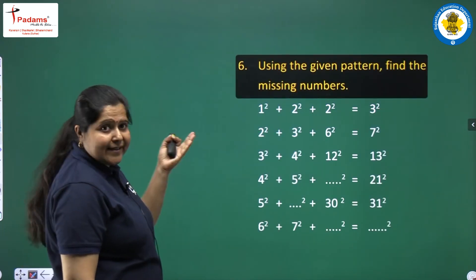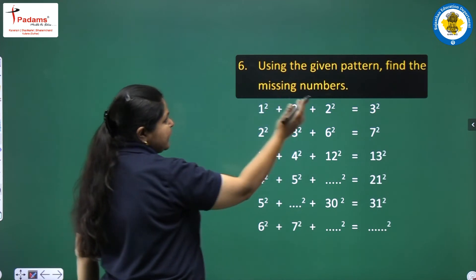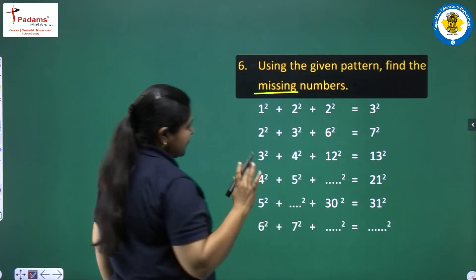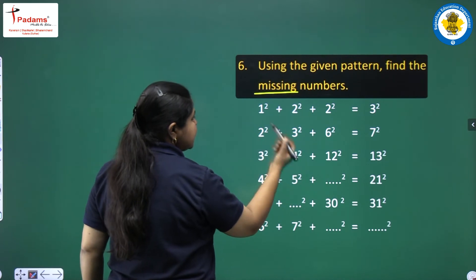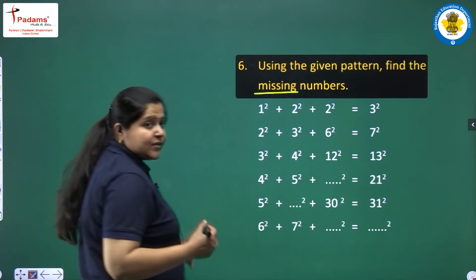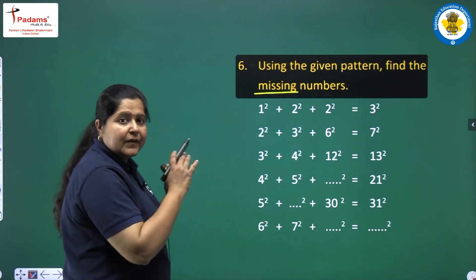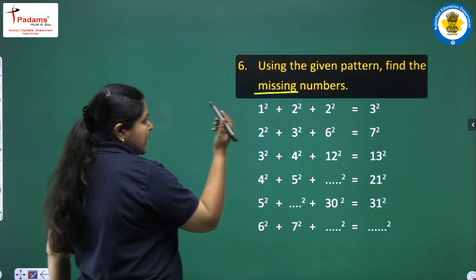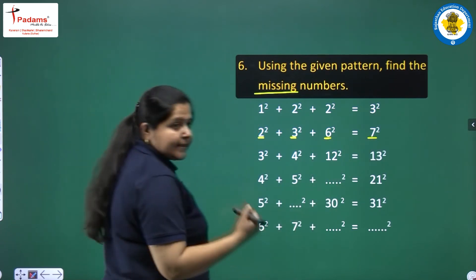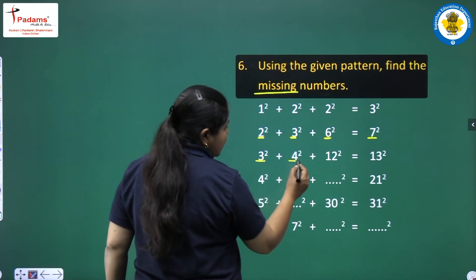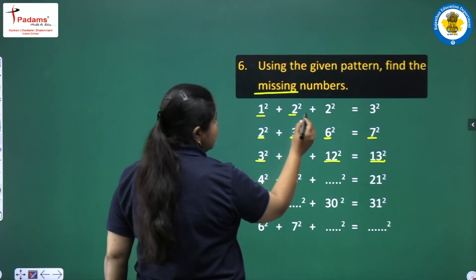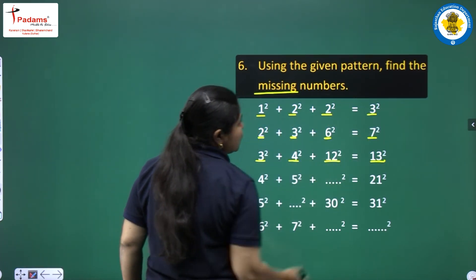We have question 6: using the given pattern, find the missing numbers. 1 squared plus 2 squared plus 2 squared equals 3 squared. 2 squared plus 3 squared plus 6 squared equals 7 squared. 3 squared plus 4 squared plus 12 squared equals 13 squared. The pattern: 2 times 3 is 6, and 6's successor is 7. 3 times 4 is 12, and 12's successor is 13.